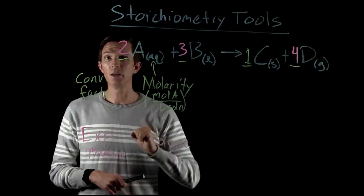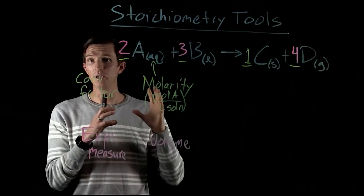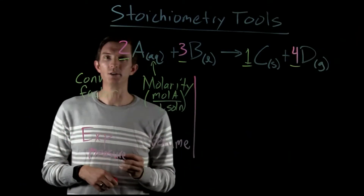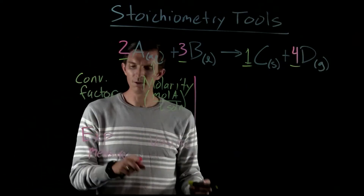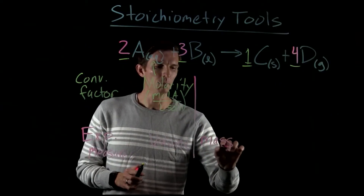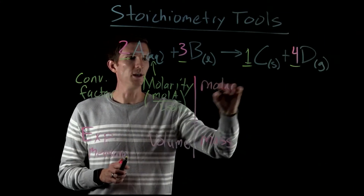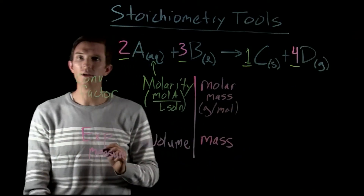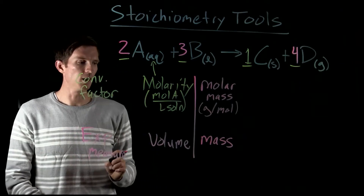If we go to something that is a pure liquid, now we can measure the volume or we can measure the mass. If our experimentally measured value is mass, then the relationship between mass and moles is our molar mass — grams per mole. That gives us the ability to relate the amount of something we would measure, mass, to the number of moles that we would have.